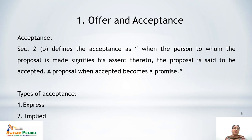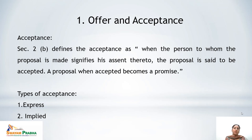Types of acceptance: it can be expressed or implied. Express acceptance is given by words, either spoken or written. Implied acceptance is shown from the behavior of the person — for example, when one boards a bus, it implies acceptance to pay the fare. This kind of acceptance, shown from the behavior of the person, is known as implied acceptance.